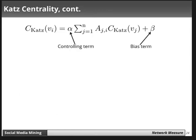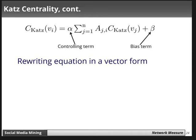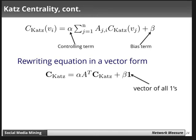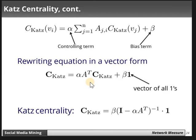There are two terms in Katz centrality: a controlling term and a bias term. Alpha is the controlling term whereas beta is the bias term. In vector form, Katz centrality is: c_katz = alpha * A^T * c_katz + beta * 1, where 1 is a vector of all ones and A^T is the transpose of the adjacency matrix. This can be rewritten as: c_katz = beta * (I - alpha * A^T)^{-1} * 1, where I is the identity matrix.